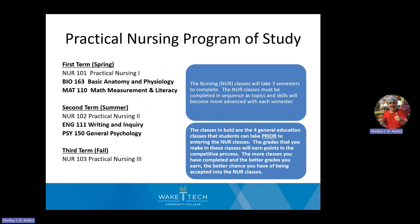So how do we determine your points? If you look at the program of study for practical nursing, you'll see there's a total of seven classes. Three classes are nursing courses that you cannot take yet. The other four are general education courses: anatomy and physiology, math, English, and psychology. Students can take those four classes ahead of time, and you receive points based on the grades you make in those classes.